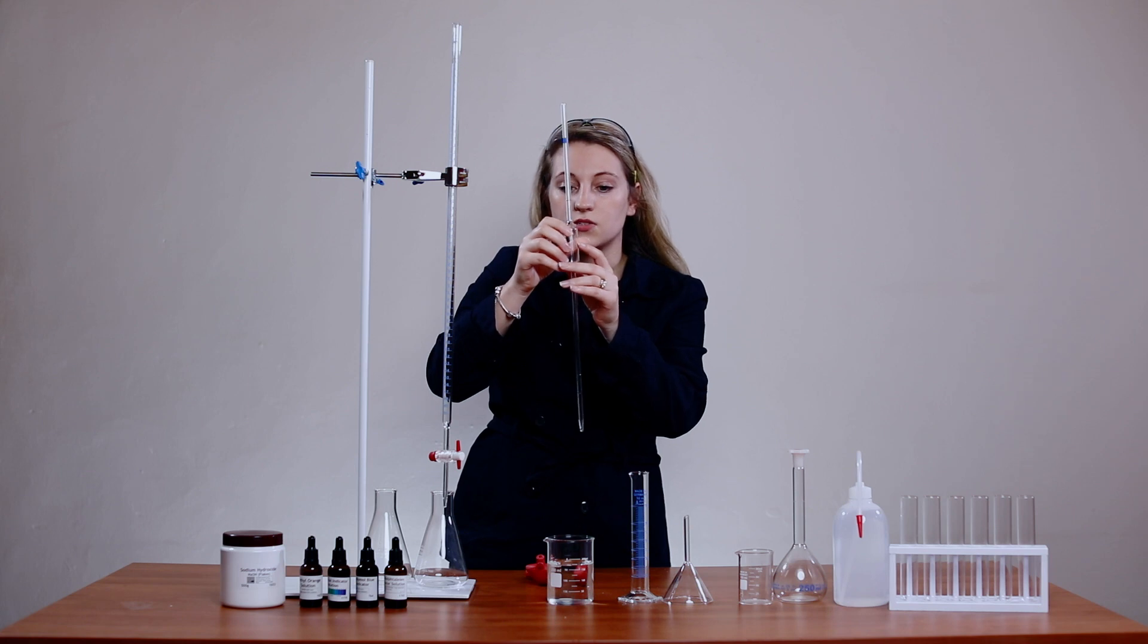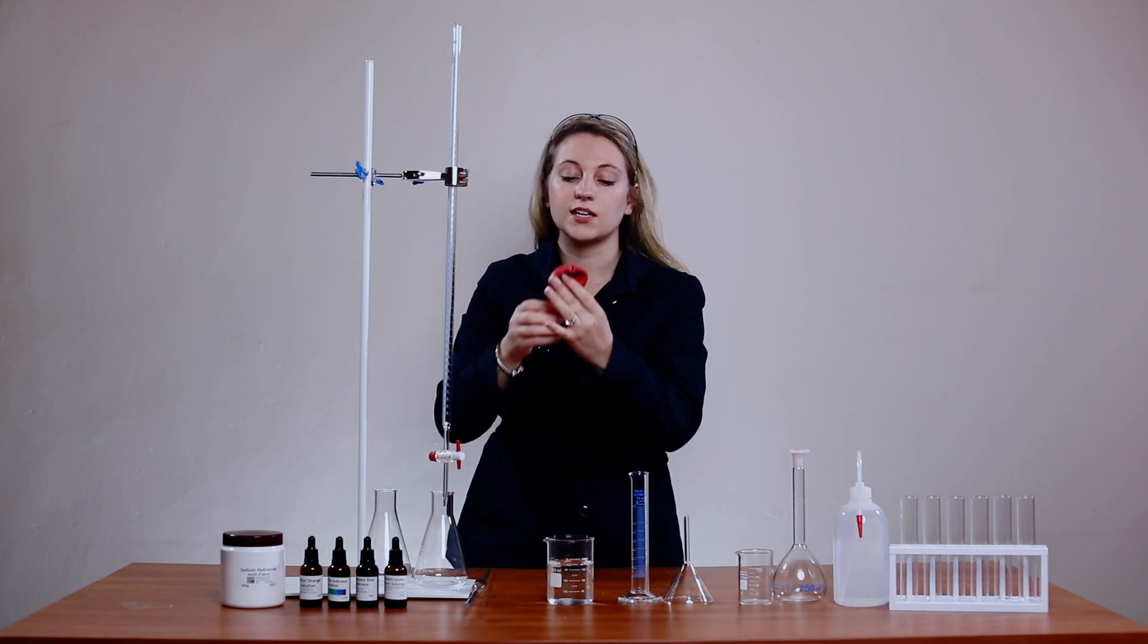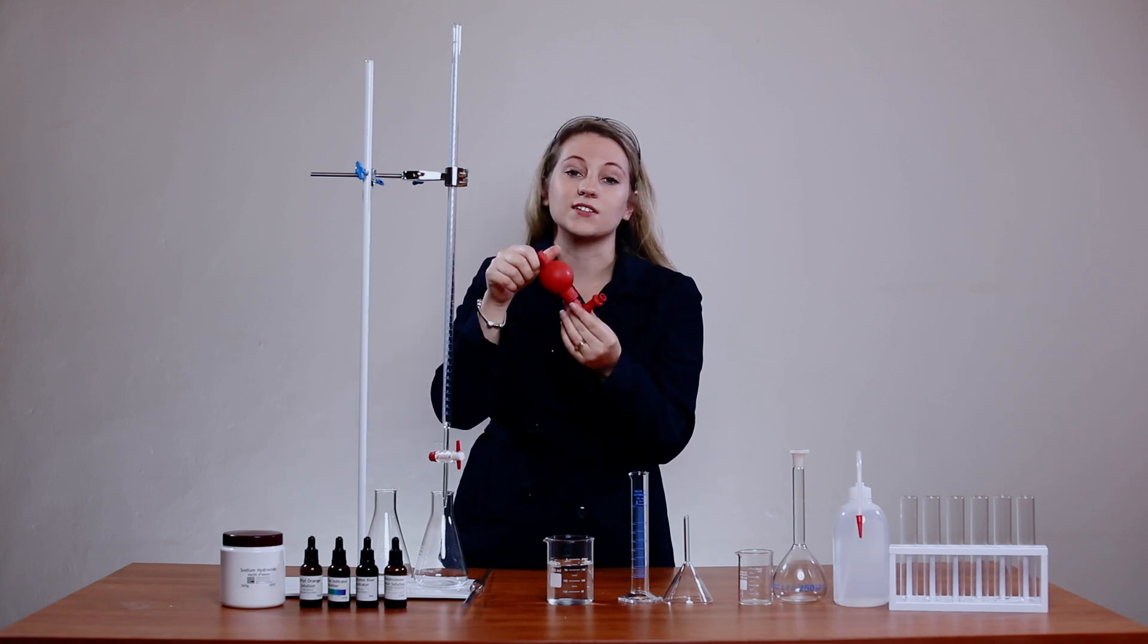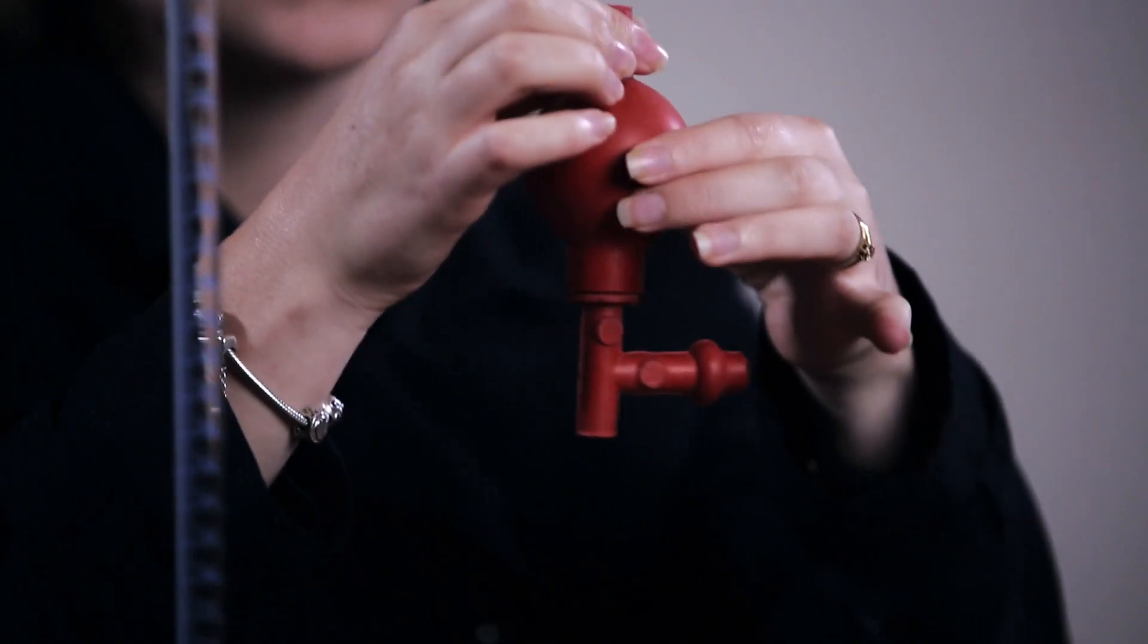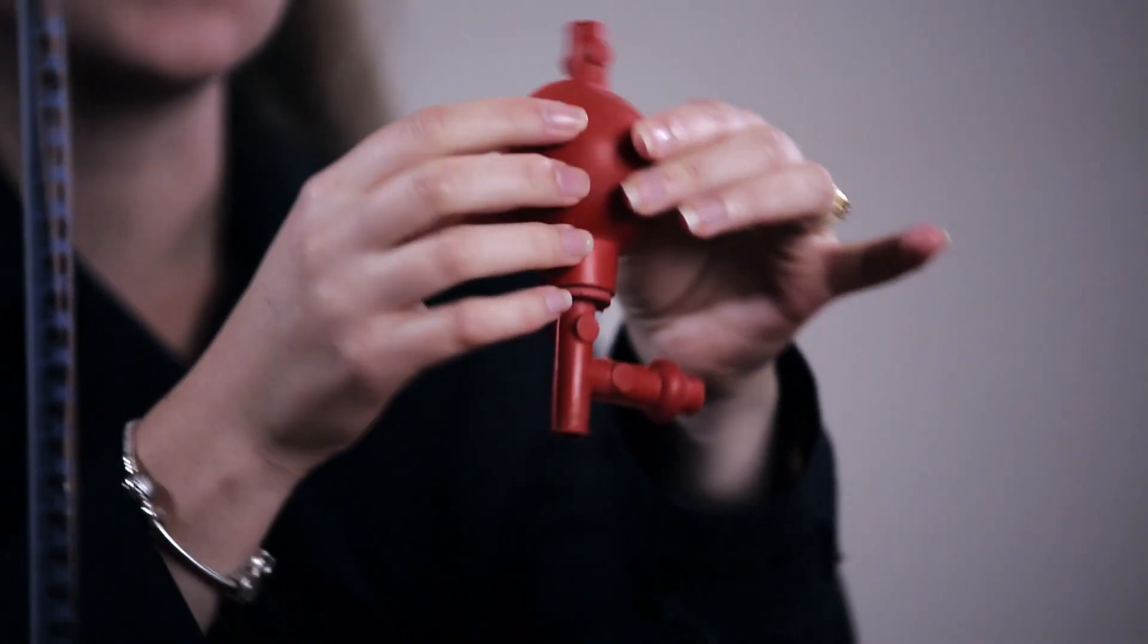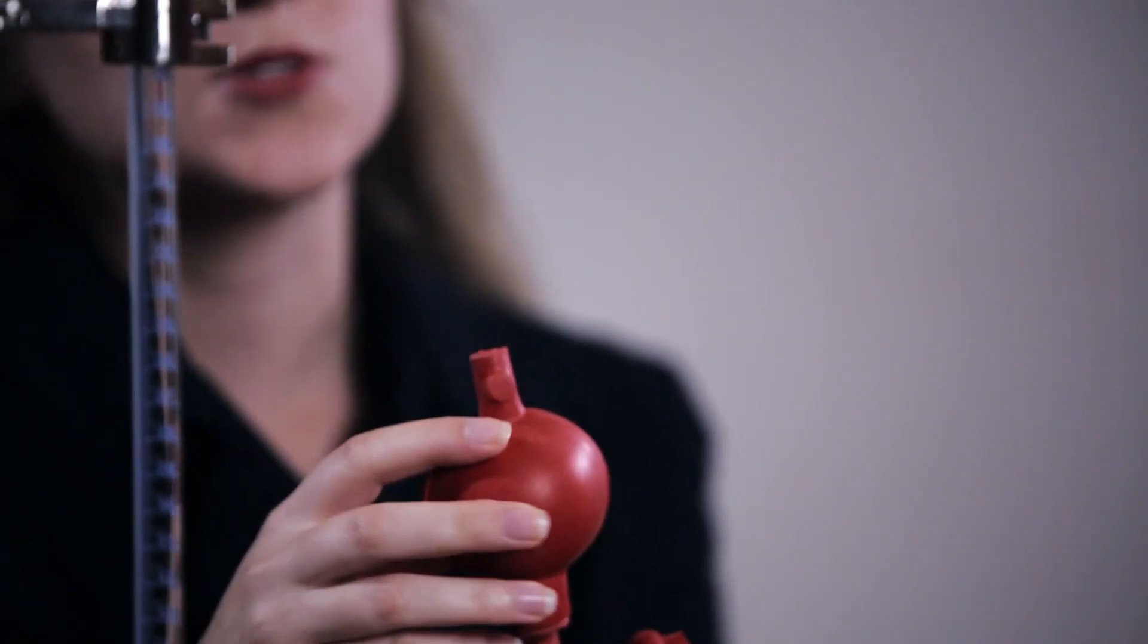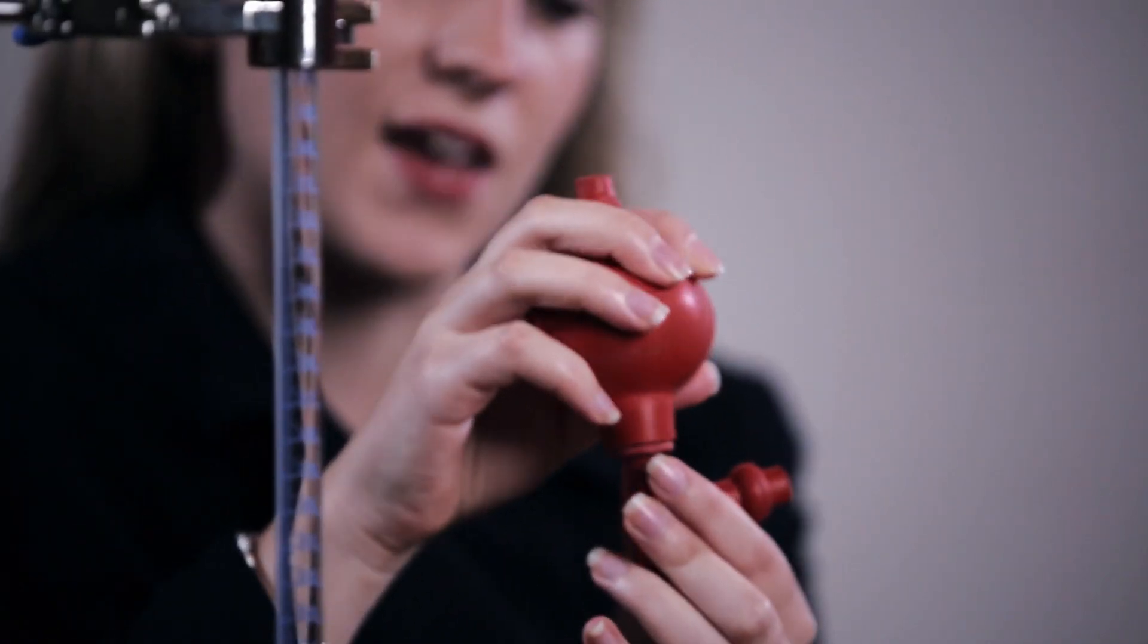To suck up the liquid you need a red pipette filler. These guys are quite fragile and it's so easy to suck up the liquid into this rubber bulb and you don't want that to happen, especially if it's acid, because your acid can then eat the rubber.